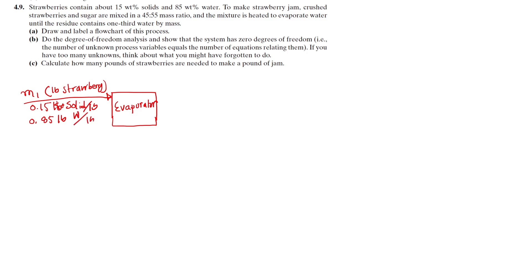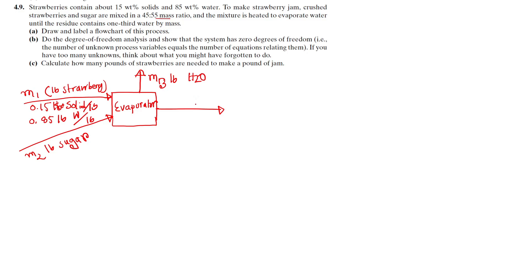To make strawberry jam, crushed strawberries and sugar are mixed in a 45 to 55 mass ratio. We have M2 pounds of sugar entering. M3 pounds of water evaporate. The jam residue contains one-third water by mass, meaning 0.33 pound water per pound of jam product.